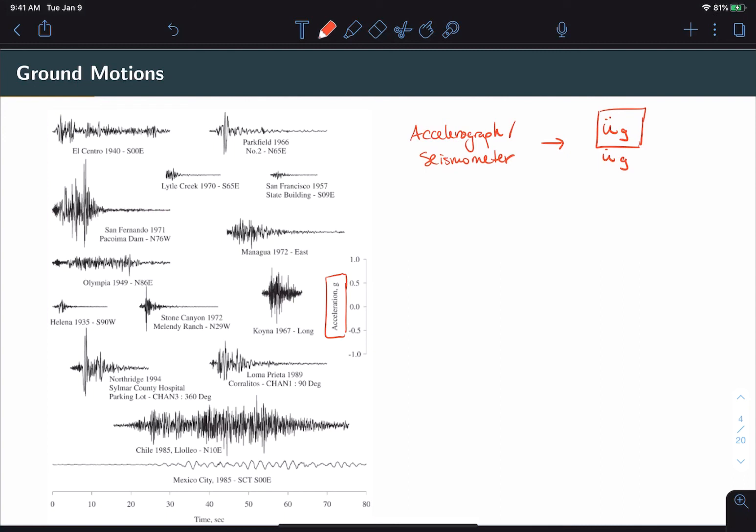In order to develop an effective framework we need to make some assumptions. So, let's start by assuming that we know the ground acceleration. Let's also assume that we're dealing with linear elastic structures. And finally, let's assume that the ground motion record is completely independent from the structural response. In other words, there is no soil-structure interaction. With these assumptions in place we can now bring in the tools that we developed for single degree of freedom dynamic analysis.